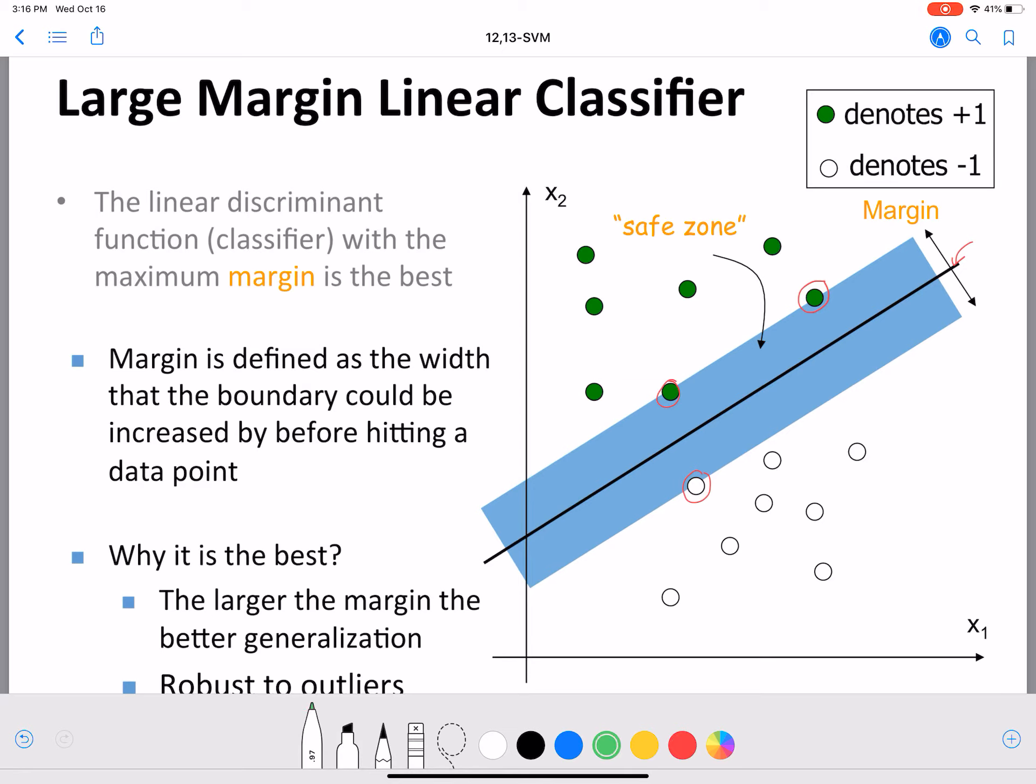What if there is a data point that occurs at test time that could be closer to the line? It could be in the safe zone, it could be here. And if you maximize the margin, there is greater chance of your classifier getting these points right. Suppose you pick this line instead.